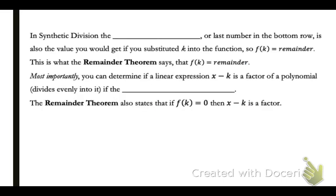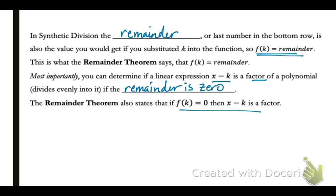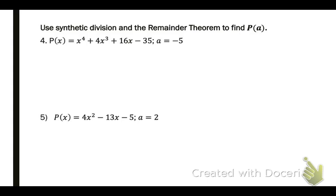Now go back to where you were taking notes. In synthetic division, the remainder, or the last number in the bottom row, is also the value you would get if you substituted k into the function. So f of k equals the remainder. This is what the remainder theorem says. Most importantly, you can determine if a linear expression is a factor if it divides evenly. And if it does, the remainder will be zero. If f of k equals zero, then that divisor is a factor. So what's beautiful is we're going to use the same process. You don't have to learn anything new. We're just going to give our answer a little differently.